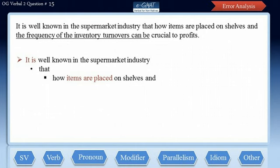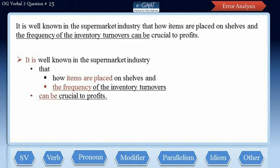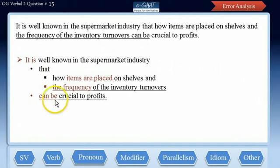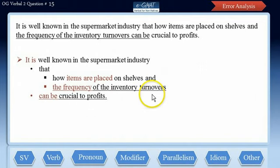What follows next is another factor that can be crucial to supermarket industry profits: 'the frequency of the inventory turnovers.' What appears next is the latter portion of the entire 'that' clause — 'can be crucial to profits' — where 'can be' is the verb for the compound subject: 'how items are placed on shelves and the frequency of the inventory turnovers.'